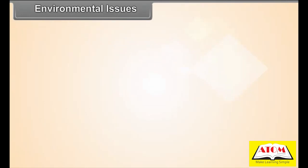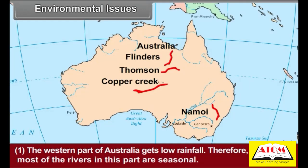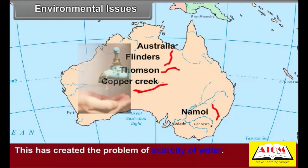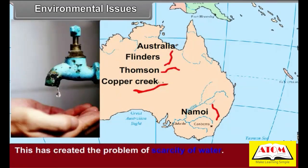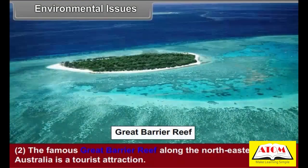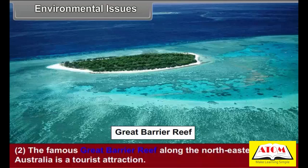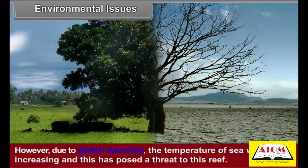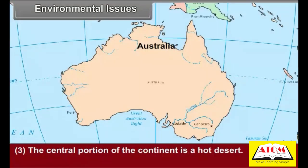Environmental issues: The western part of Australia gets low rainfall, so most rivers in this part are seasonal, creating the problem of water scarcity. As a result, people in this region face famine conditions. The famous Great Barrier Reef along the northeastern coast is a tourist attraction; however, due to global warming, the temperature of sea water is increasing, posing a threat to this reef.